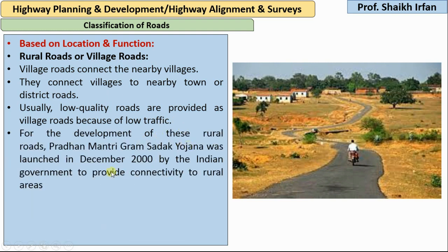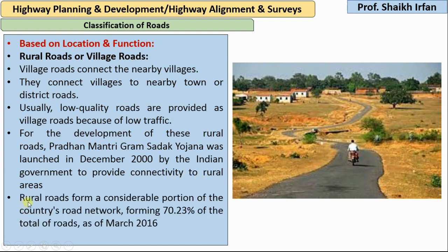For the development of village roads, the government launched the Pradhan Mantri Gram Sadak Yojana scheme in December 2000 to provide connectivity to rural areas. While national highways constitute only 2.7% of the total road network, rural roads form about 70.23% of India's total roads as of March 2016.